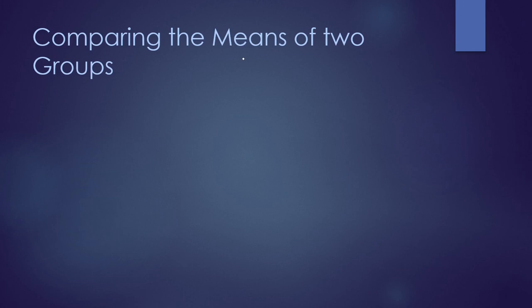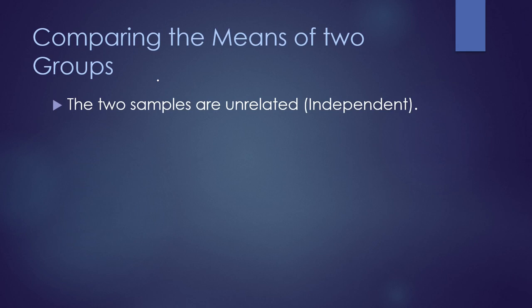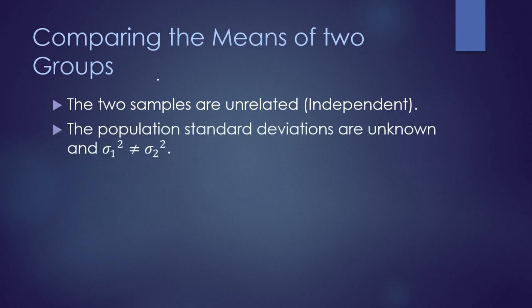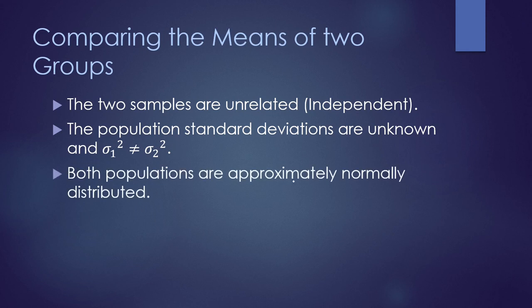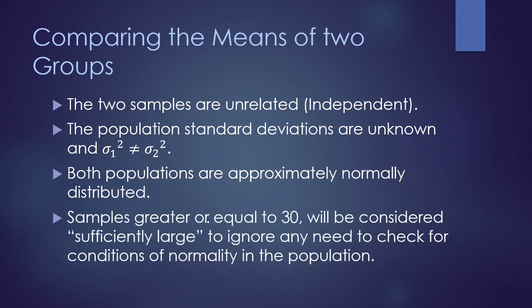We are going to compare the means of two groups, and we have some conditions. The first condition is the two samples are unrelated or independent from one another. The population standard deviations are unknown, and the variance of the first group cannot equal the variance of the second group. Both populations have to be approximately normally distributed. Samples greater than or equal to 30 will be considered sufficiently large to ignore any need to check for conditions of normality in the population.